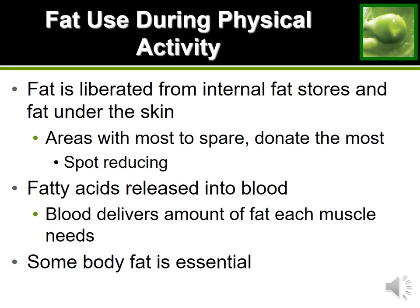We also talked about spot reducing — when you try to target fat loss in a specific body part by exercising that body part, it's not effective. You're not able to choose where you want to lose fat; your body will do it in the most efficient way for itself, releasing fat from where you have it stored the most. The one exception is aerobic activity, which targets the fat cells in your abdominal area — so if you want to lose fat from your stomach, cardio is one way to target it.